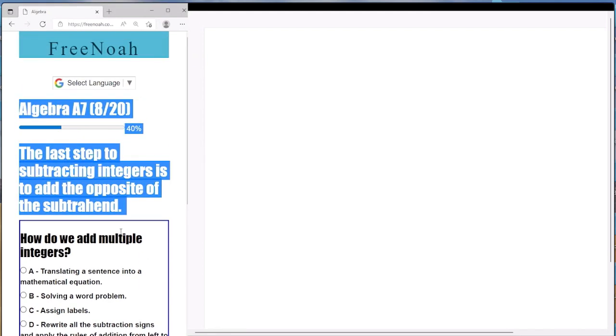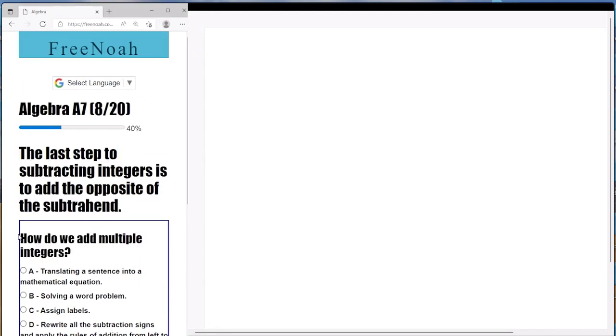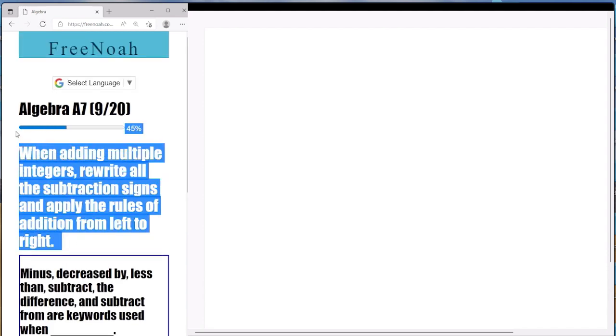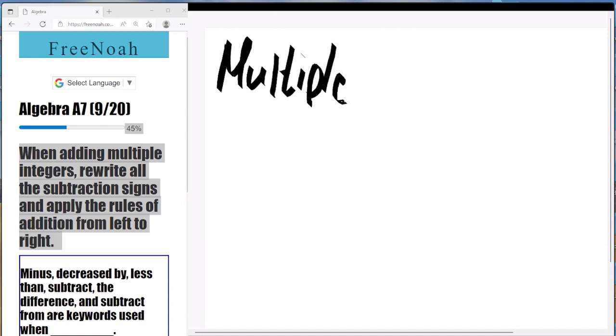Adding multiple integers. So how do we add multiple integers? Well, when adding multiple integers, we're going to rewrite all the subtraction signs and apply the rules of addition from left to right. So ultimately,